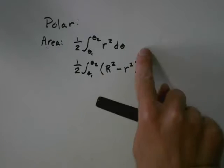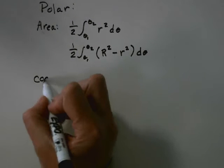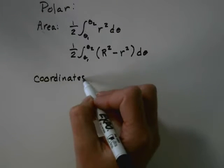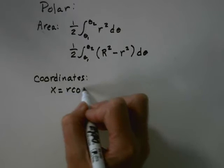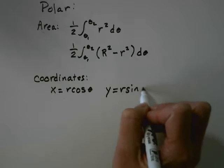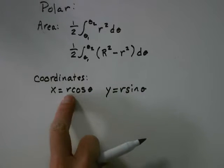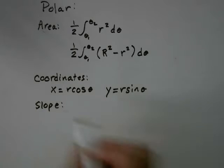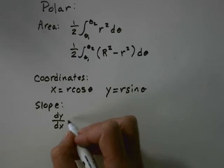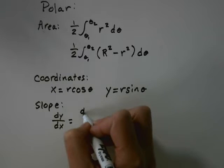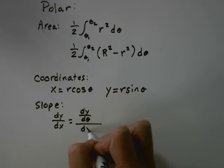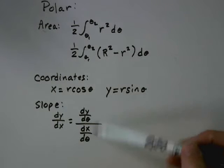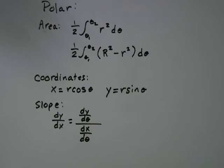A big common mistake is to do r minus r and then square it. Oftentimes you'll be asked to relate polar back to rectangular: x is always r cosine theta, y is always r sine theta, and you replace r with whatever your equation is. The last commonly asked topic is slope: dy/dx equals dy/d-theta over dx/d-theta. You find the expressions for x and y in terms of theta, take their derivatives, and put them in that fraction.